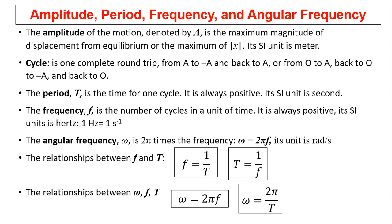The period T is the time for one cycle. It is always positive. Its SI unit is second.